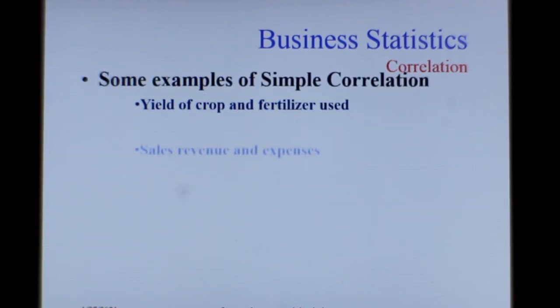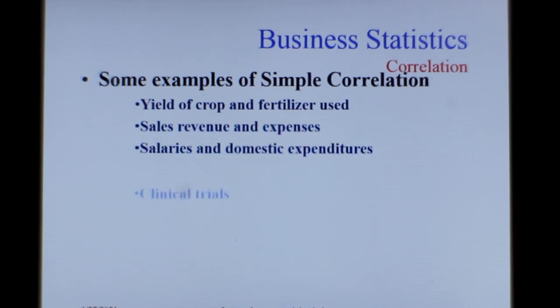I can give a number of examples of correlation. You can see all those things I have depicted there. They are all generally positive correlation. The yield of crop generally grows more when more or different types of fertilizers are used, and generally sales revenue if it is more, the expenses also go up. Salaries, domestic expenditures, clinical trials—all these things are good examples of positive correlation.